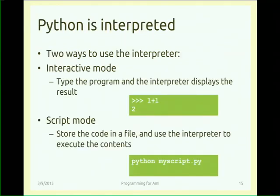Python is interpreted. We write the source code and the Python interpreter reads the code line by line and executes it. There are two different ways to use the Python interpreter. One is called interactive mode, where you write on the console and see the effects during writing. The other is called script mode, where you write the program in a file and then ask the Python interpreter to interpret the file.